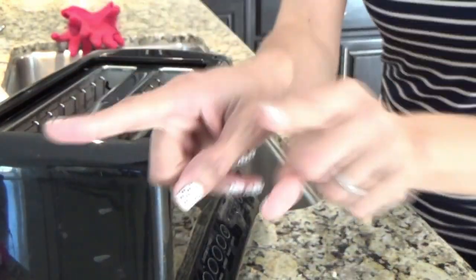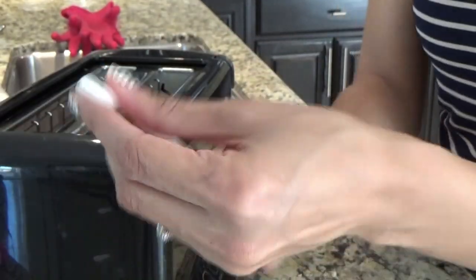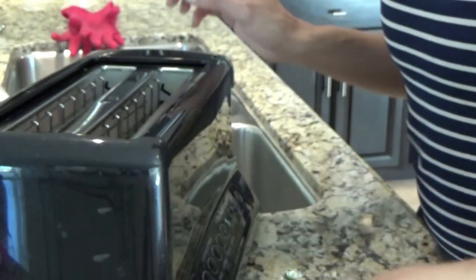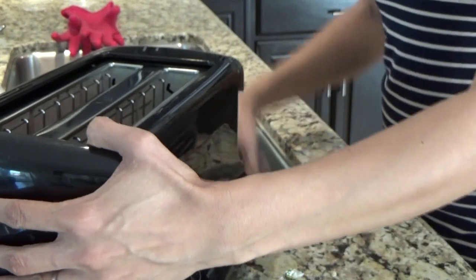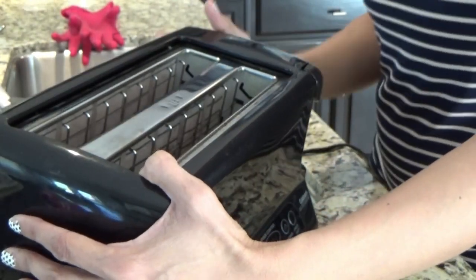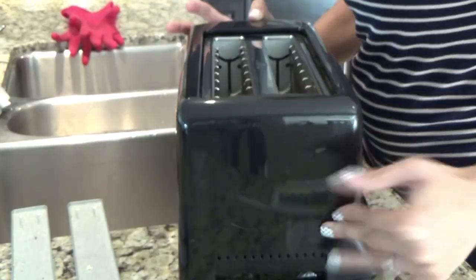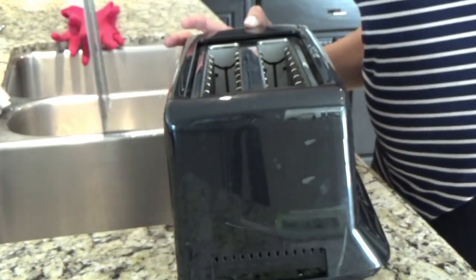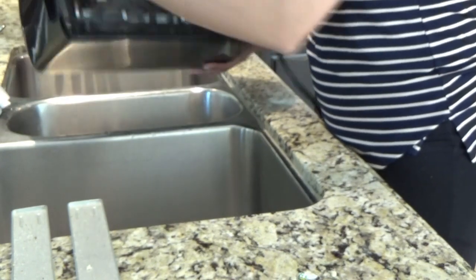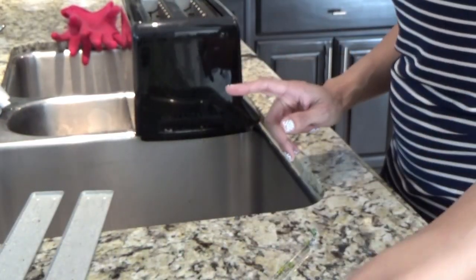So, tools: you're gonna need a straw, the sturdier the better, not like a coffee cup straw or anything. First thing you want to do is unplug your toaster, then make sure it's cool because you don't want anything melting. Take out the tray, you can keep this out for now. Then shake it out. I'm doing it on top of my sink because of the crumbs.